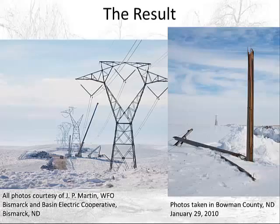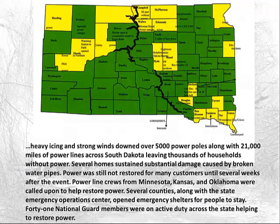Wooden power poles were snapped by the combination of wind and ice. The yellow counties show all those affected just by January 22nd — with another day of high winds still to come. Over 5,000 power poles went down, 21,000 miles of lines were taken down, and thousands of people lost power — with significant areas without power for weeks — all from an event that produced less than a quarter inch of QPF.